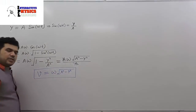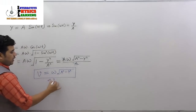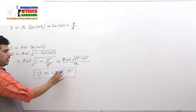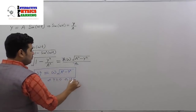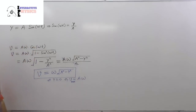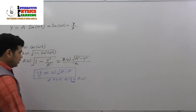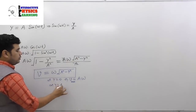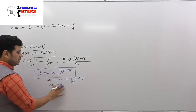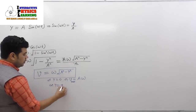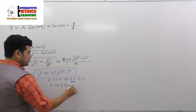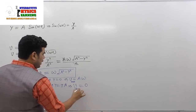So v = ω√(a² - y²). Let's check: at y = 0, that is at the mean position, we get v = aω, which is the maximum velocity. And at y = ±a, we get a² - a² = 0, so v = 0, and that velocity is minimum.